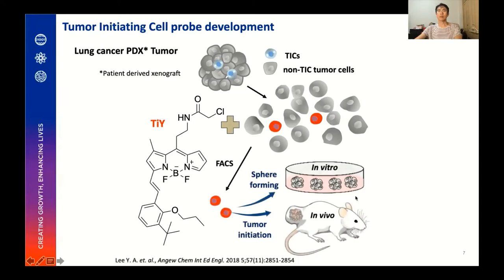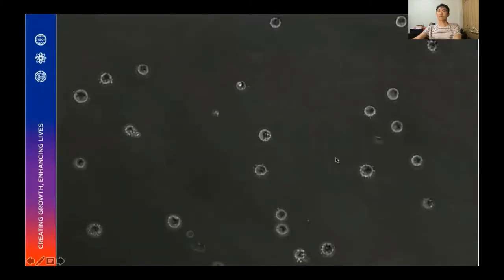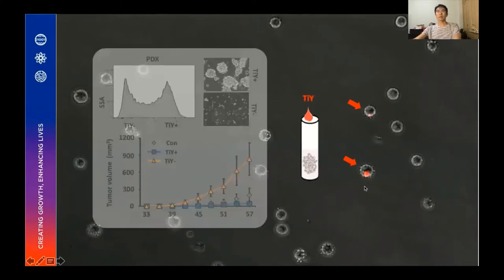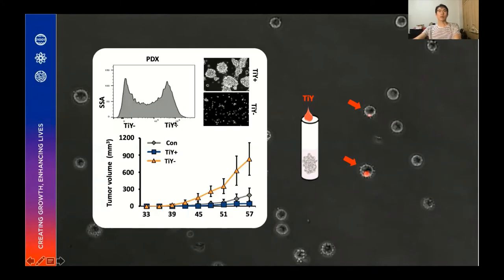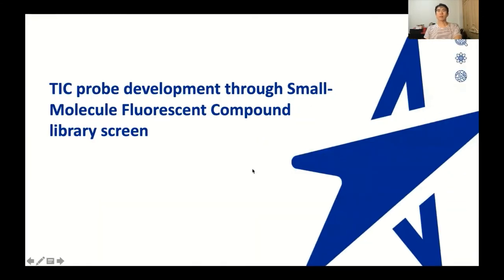The probe-positive cells showed tumorigenicity both in vitro and in vivo. Here are the cells shown a few minutes back — now we can see that some of the cells are stained by this probe. The probe-positive cells showed high tumorigenicity in both in vitro sphere formation and in mice after subcutaneous injection, compared to probe-negative cells. In the next few slides, I'm going to talk about TiY development by small molecule fluorescent compound library screening.